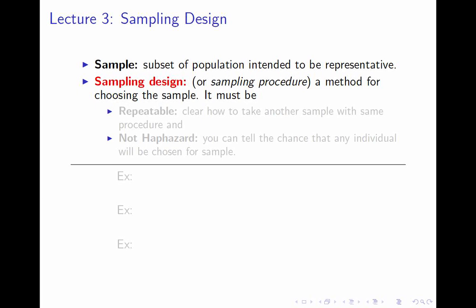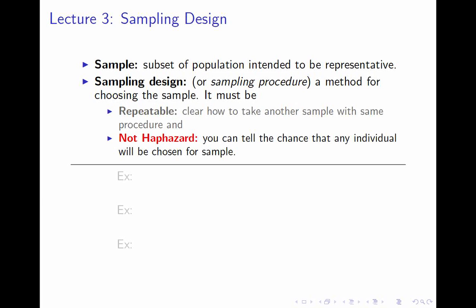There are two baseline things you expect from the sampling procedure. First, your sampling procedure should be repeatable — it should be clear from your description how I could go off and take another sample by the same procedure. It might have different individuals, but the process should be the same. Second, it should be not haphazard; I should be able to figure out what the chance of any particular individual being chosen is. This is a practical question because your end-of-semester group projects will all involve doing some sampling, so you will need to design and describe a sampling procedure.